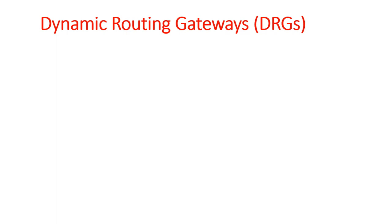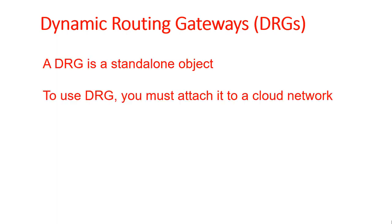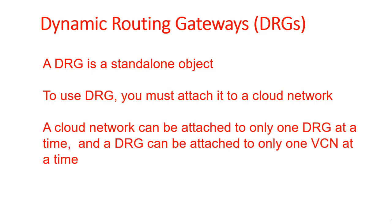Let's talk about some of the features of DRG. A DRG is a standalone object. To use it, you must attach it to a cloud network — you create it separately and then attach it. A cloud network can be attached to only one DRG at a time, so you cannot have multiple DRGs for a single VCN.